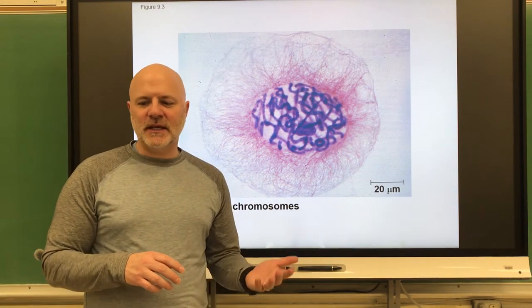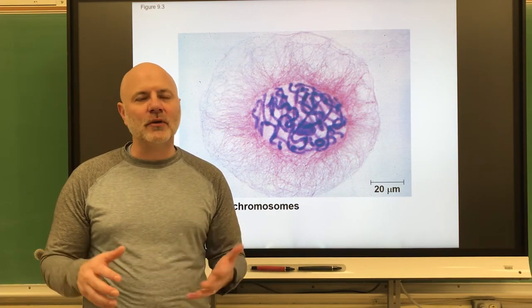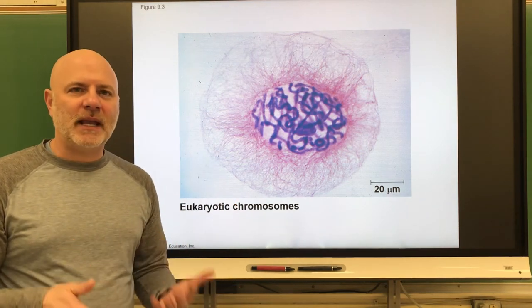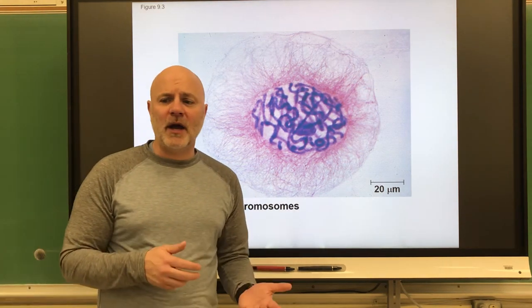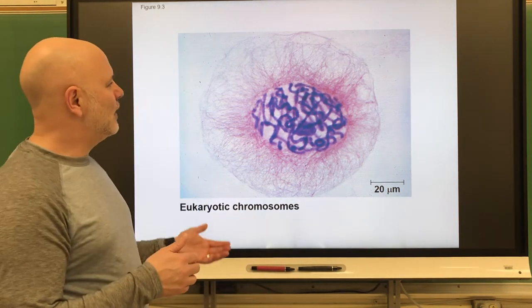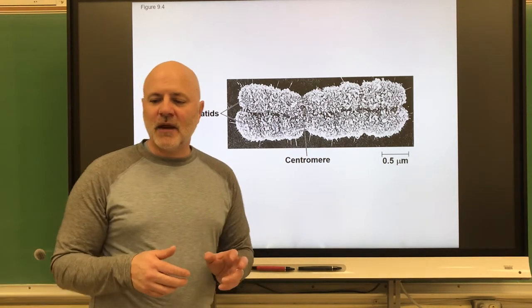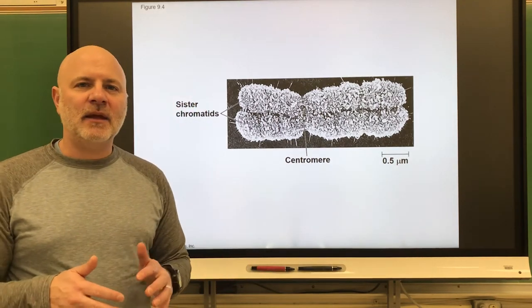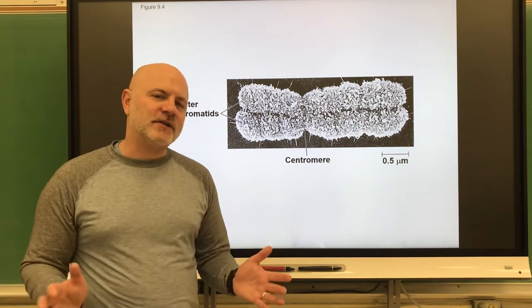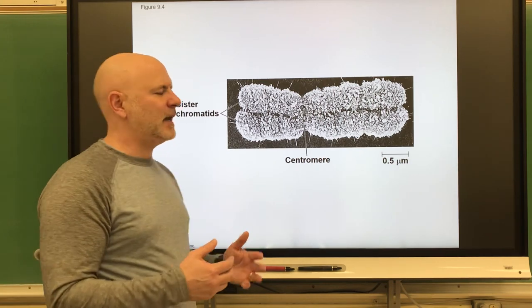The other type is meiosis, which is the division of a diploid nucleus into four haploid nuclei. Through meiosis is how we make gametes, and we'll talk about meiosis in the next chapter. Before either mitosis or meiosis occurs, DNA replication takes place — that's where DNA makes a copy of itself.